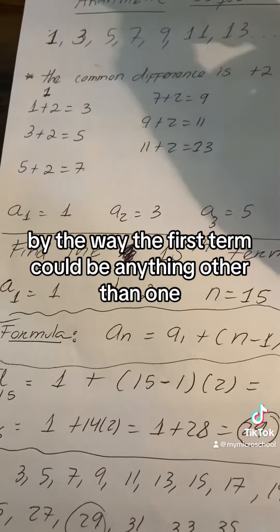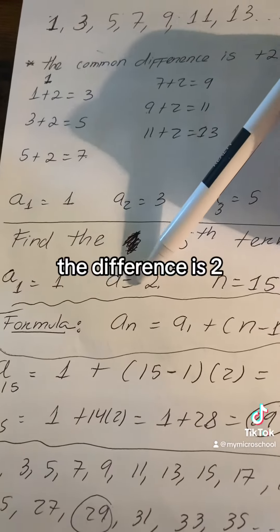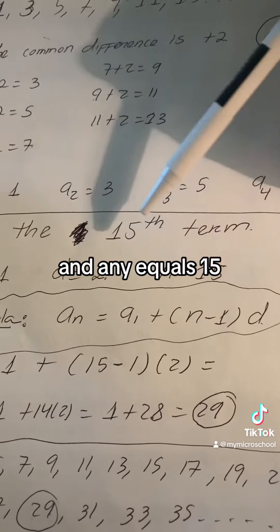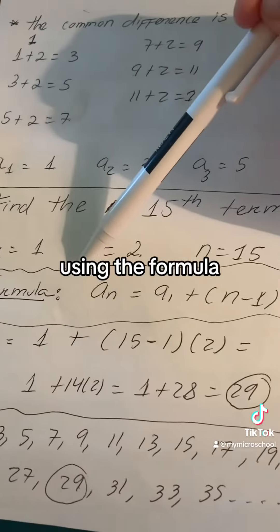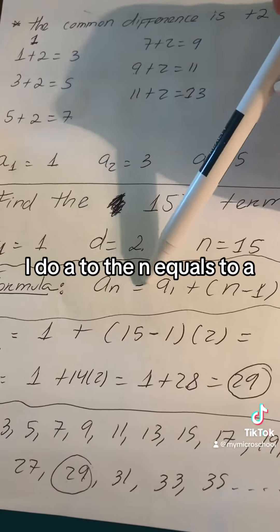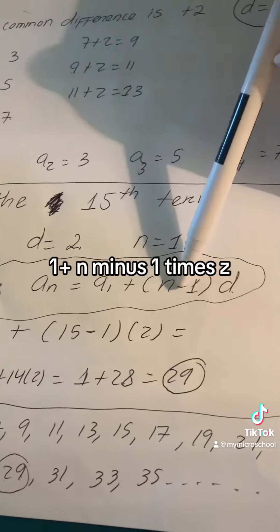By the way, the first term could be anything other than 1, but in this case it's 1. The difference is 2, and n equals 15 because we're looking for the 15th term. Using the formula, I do aₙ = a₁ + (n-1)d.